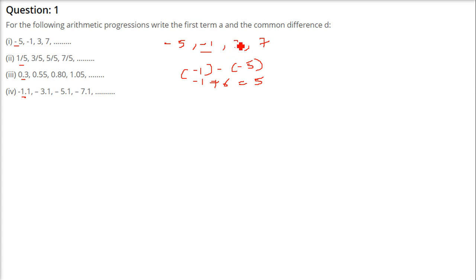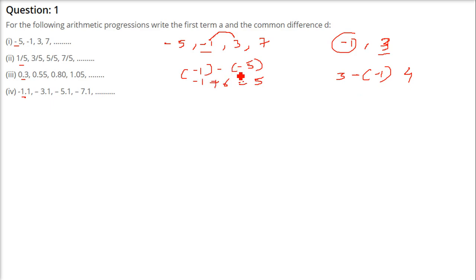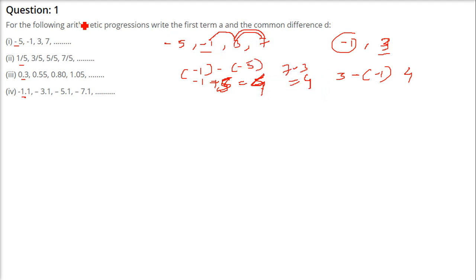You can verify with any consecutive values. For example, 3 minus (-1) is also 4, and 7 minus 3 is also 4. For every consecutive pair, the difference must be the same. Only then the sequence is in arithmetic progression.